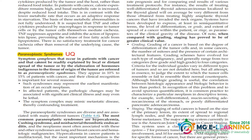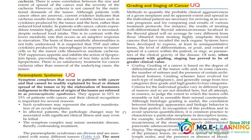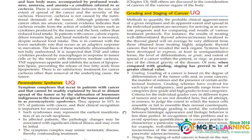Paraneoplastic syndrome की definition, तीन points, और examples करने हैं। Table 6.6 में बहुत सारी examples बताई गई हैं, लेकिन पूरा table नहीं करना — मैं आगे भी explain करूंगी।